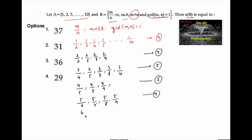Starting with 6: 6 upon 7 is valid, 6 upon 8 we cannot take, 6 upon 9 we cannot take, 6 upon 10 we cannot consider. So only 1 element.